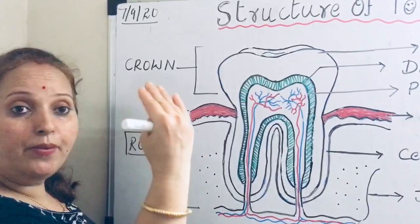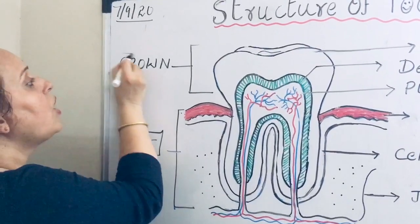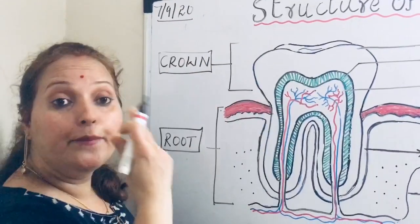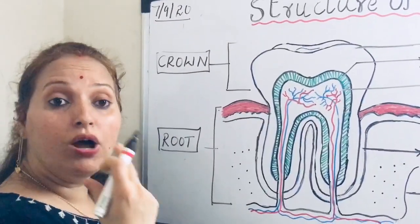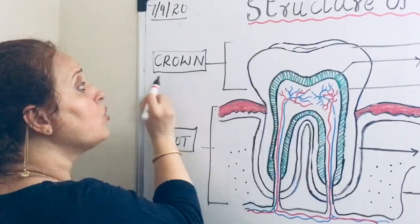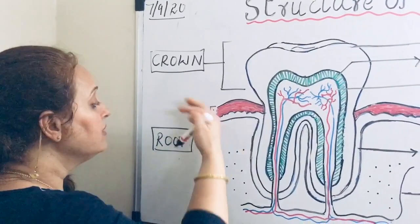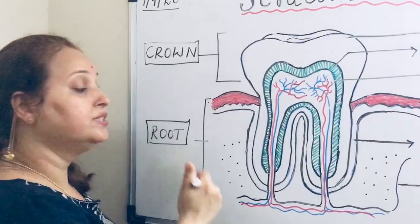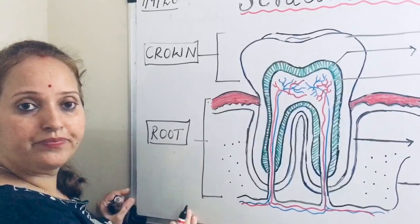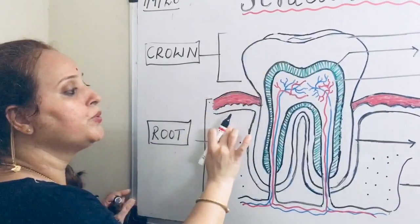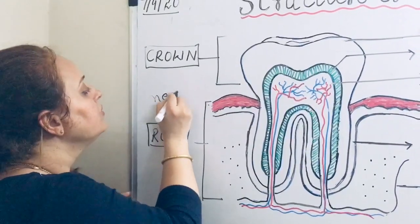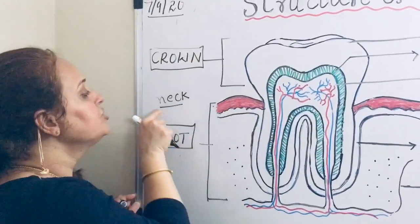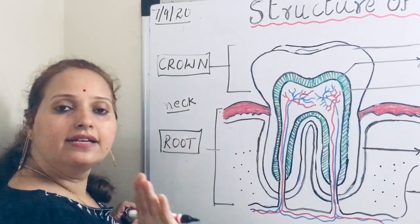Our teeth are divided into two parts. The upper portion is called the crown — just as a crown is always present on the head, the upper white portion which we can all see is called the crown of a tooth. The lower portion, which is not visible and is fixed in the jaw bone, is called the root. Between the crown and the root there is another part called the neck — just like we have a neck in the middle, that middle part is called the neck.